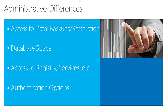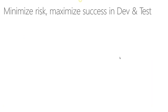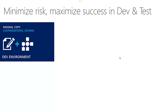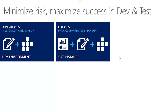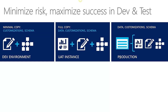Microsoft Dynamics CRM Online also gives you the ability to have a DEV and a user acceptance testing environment with the use of non-production organizations. You can perform things such as a minimal copy, in which you copy all the customizations and schema from your production organization into a DEV environment. You can also dump all your data, customizations, and schema into another instance such as a user acceptance testing instance, and all that information once developed and tested can be deployed into your production organization.